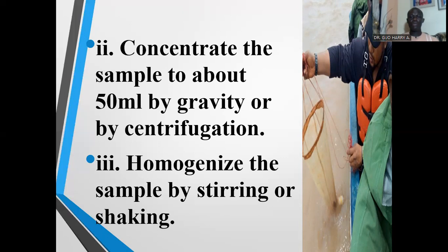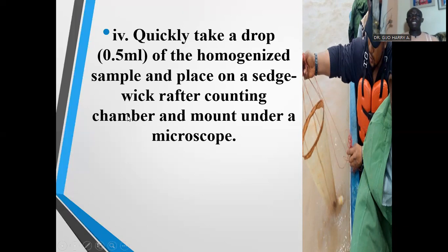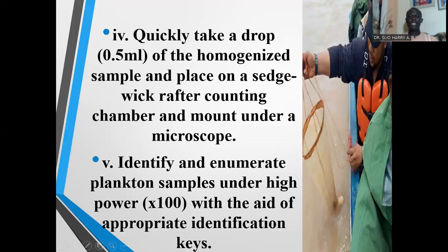The sample is then homogenized by stirring or shaking so that it is well mixed. When properly mixed, quickly take 0.5 mls of the homogenized sample and place it on a Sedgwick-Rafter counting chamber and mount it under a microscope. With the aid of the microscope, you can now identify and enumerate the plankton samples under the high power objective lens, using appropriate identification keys to properly identify the planktons.